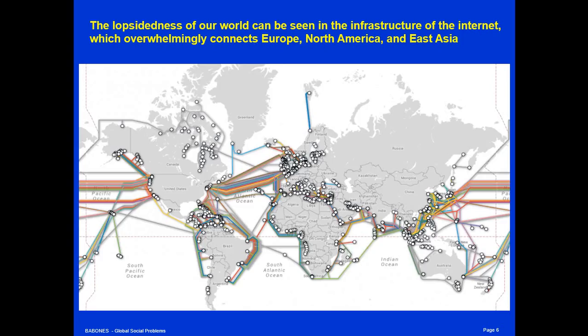The lopsidedness of the world — the gap between rich and poor — can be seen visually in something like the map of the world's internet infrastructure. This is a map of undersea cables, and as you can see, there is a dense network of cables connecting North America to Europe and North America to East Asia. There are relatively few cables across the Indian Ocean, up the Red Sea, the Persian Gulf, or across the South Atlantic — those areas are poorly connected because they're simply not that rich. In fact, if you want to get an internet signal from South America to Europe, it will almost certainly go via North America, not directly across the Atlantic. Similarly, from Australia to Europe, it will almost certainly go via North America, because the density of connections is so much stronger among the rich countries of North America and Europe.